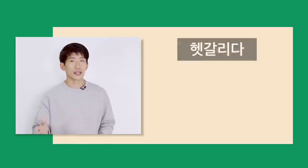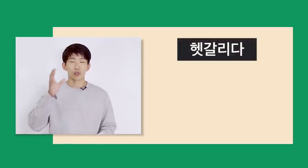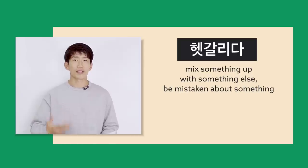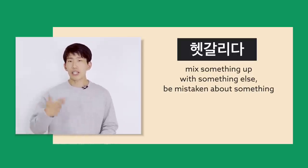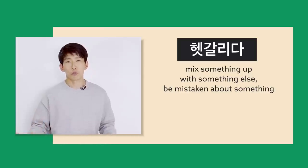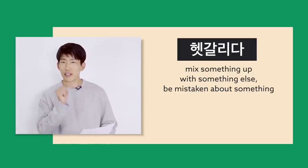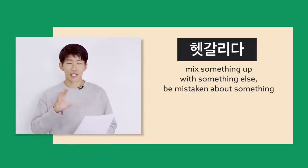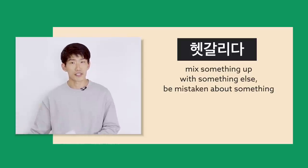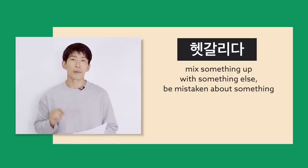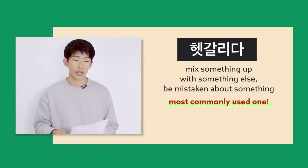첫 번째는 헷갈리다예요. 헷갈리다. If you slow it down, it's 헷-갈-리-다. 헷갈리다 is when you mix something up, when you are mistaken about something. The tricky part is when you look up 'confused' in a dictionary, you rarely see this definition or translation, except in sample sentences. But this is the most commonly used one. So, 헷갈리다.